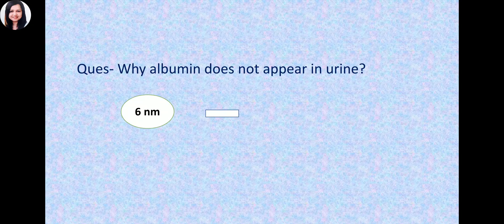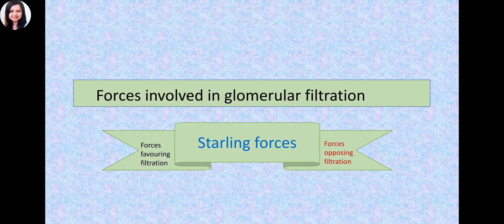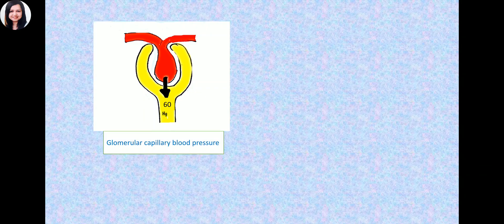Edema will also be present in these conditions. Now, what are the forces involved in glomerular filtration? There are forces favoring filtration and forces opposing filtration, and the balance of these forces is known as Starling forces. The physical forces include: number one, glomerular capillary blood pressure — defined as the fluid pressure exerted by blood within the glomerular capillaries. This depends on the contraction of the heart and the resistance provided by the afferent and efferent arterioles. The normal value is 55 to 60 mmHg — very high compared to capillaries elsewhere in the body.